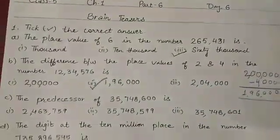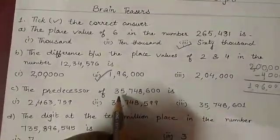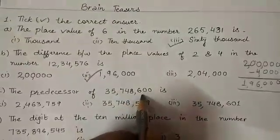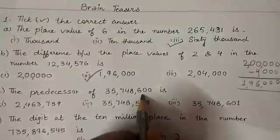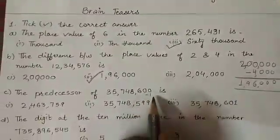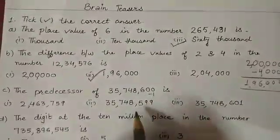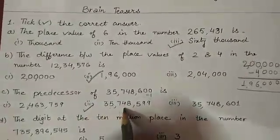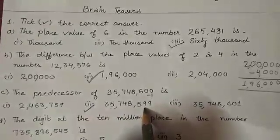Next, the predecessor of 35,748,600 is. To get the predecessor, we should subtract 1, and if we subtract 1 from the given number, it should become 35,748,599.